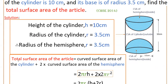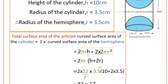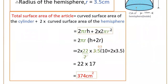The curved surface area of the cylinder is 2πrh, and the curved surface area of one hemisphere is 2πr². So the total is 2πrh + 2×(2πr²). Taking 2πr common, this becomes 2πr(h + 2r). Substituting: 2 × (22/7) × 3.5 × (10 + 2×3.5) = 2 × (22/7) × 3.5 × 17. Cancelling 7 with 3.5 gives 0.5, so this equals 22 × 2 × 0.5 × 17 = 374 square centimeters.